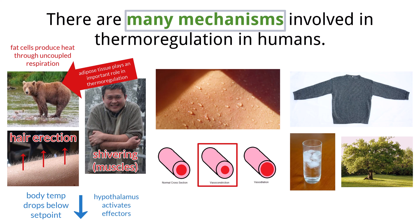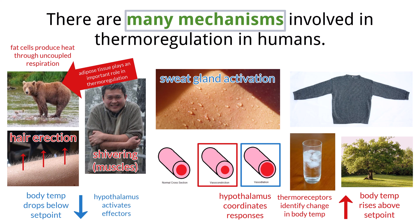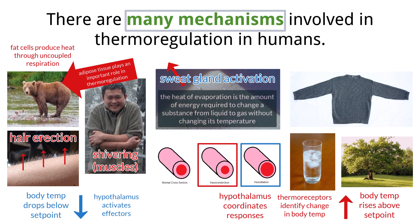When the body overheats and body temperature rises above the set point, negative feedback mechanisms help cool down and restore thermal balance. Peripheral thermoreceptors detect changes and relay signals to the hypothalamus, which coordinates several responses. First, vasodilation occurs — blood vessels near the skin surface widen, increasing blood flow to the skin and allowing more heat to be lost at the skin's surface. Next, sweat glands are activated to release moisture; as the sweat evaporates, it removes heat from the body, producing a cooling effect. Sweating is especially effective because water has a very high heat of evaporation, meaning every drop of sweat removes a large amount of heat as it evaporates.